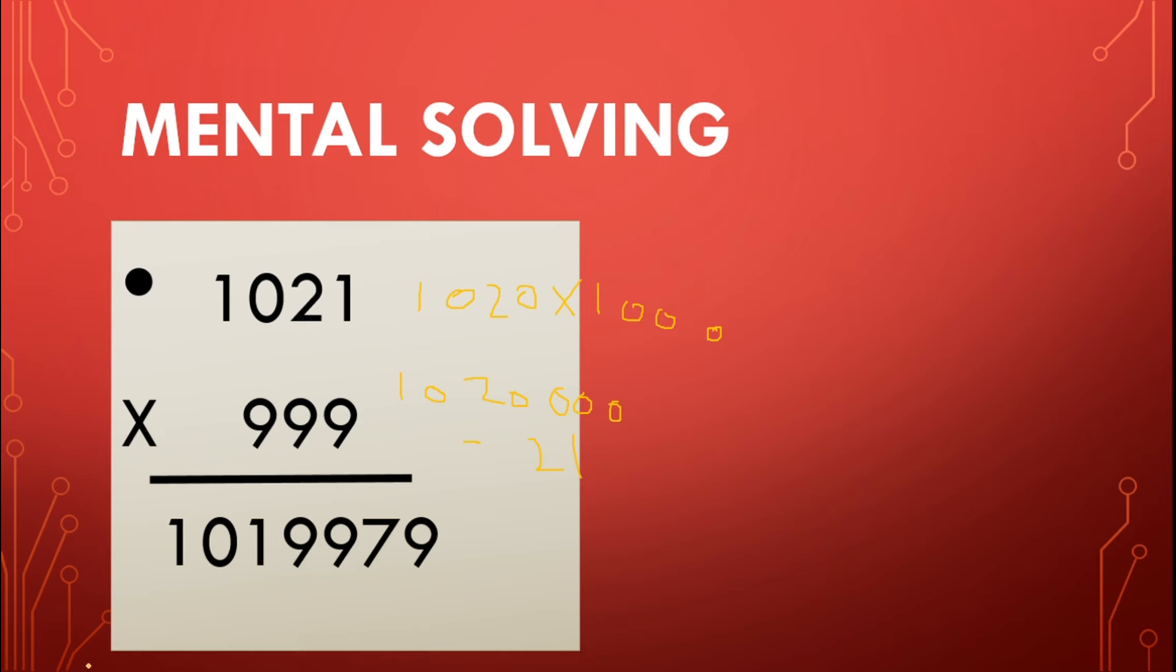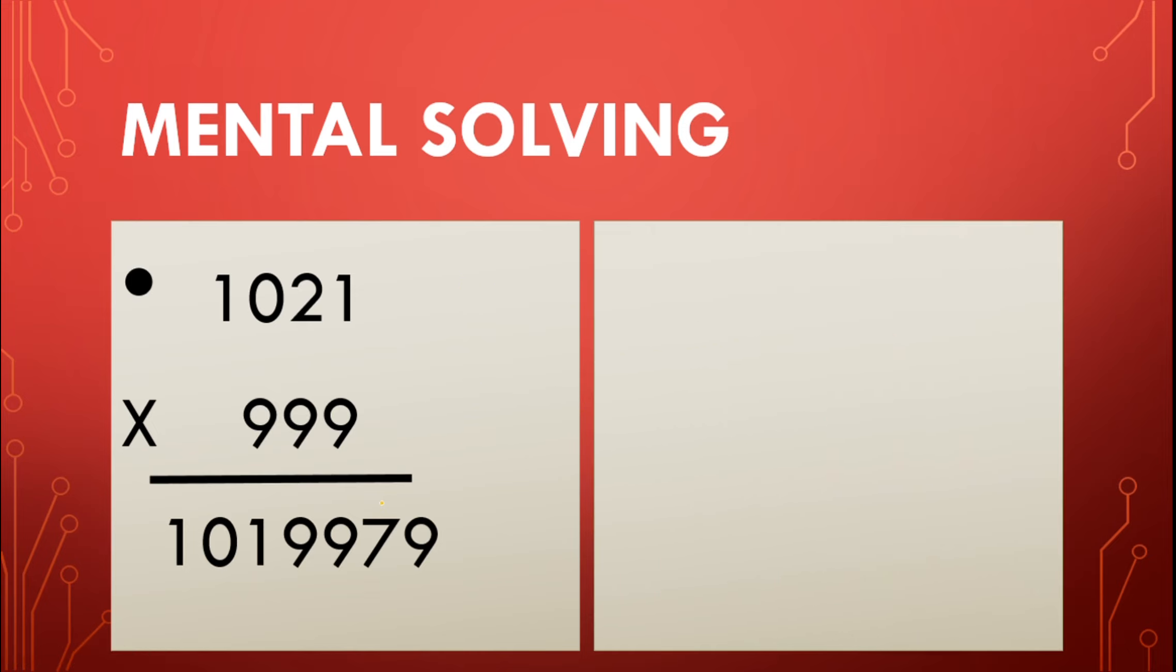You saw how easy it is. That's why it is called a super fast base method. Now let's see another example: 1,025 into 997. How we did it? Let's see.